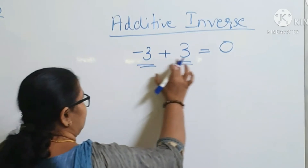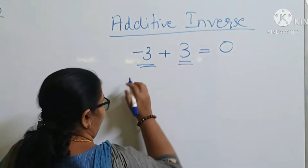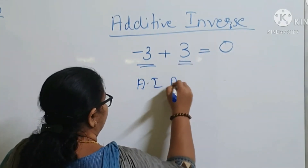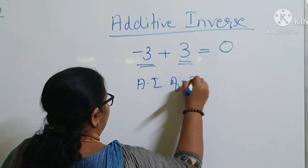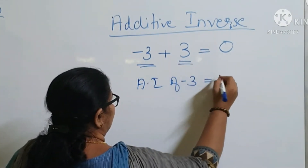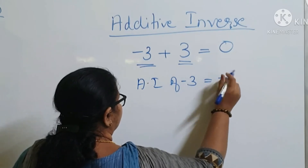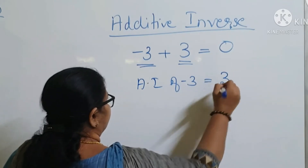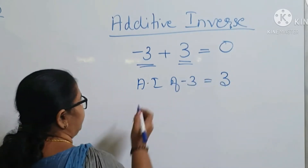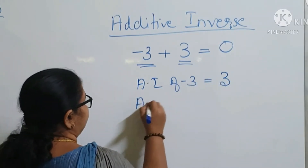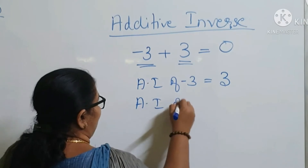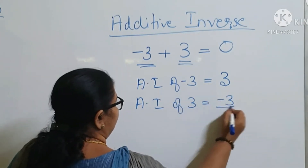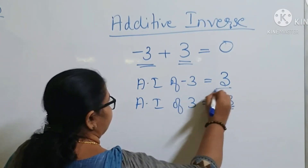That is, minus 3 plus 3 is 0. The additive inverse of minus 3 is equal to positive 3. And the additive inverse of plus 3 is equal to minus 3.